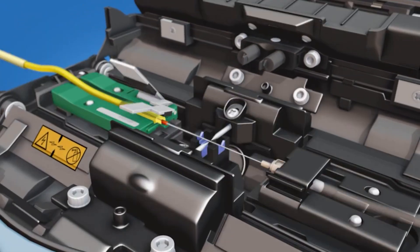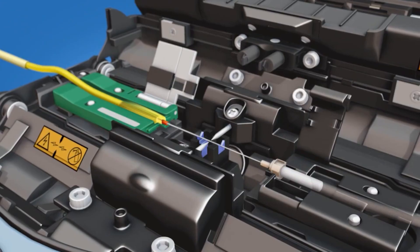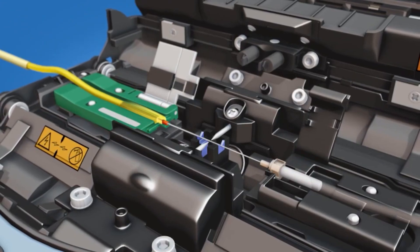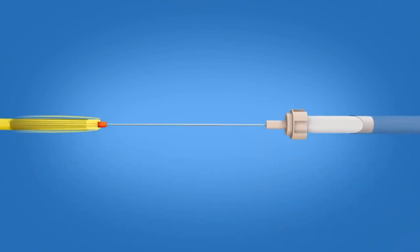Open the fiber holder and the ferrule unit holder clamps after the splicer has performed a tension test on the splice. Continue to keep tension on the splice while removing it from the fusion splicer.